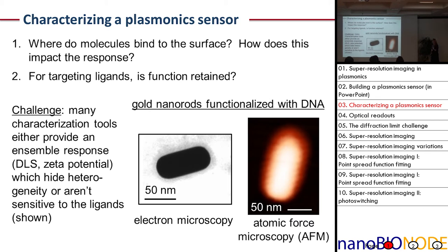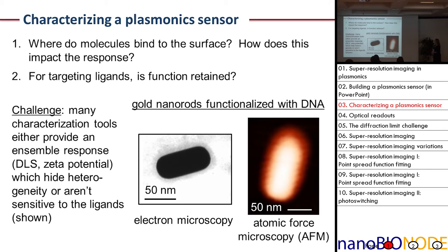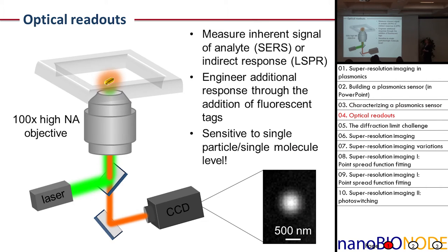All of these issues are really important, and the challenge is that many of our characterization tools are simply ill-equipped to answer these questions. We can do things like dynamic light scattering or measure zeta potentials, which gives us a sense of successful surface functionalization at an ensemble level, but we're not able to see whether all of our sensors are performing optimally. We can turn to single-particle techniques like electron microscopy and atomic force microscopy, but these are often not sensitive to the ligands on the surface since these are typically carbon-based and give poor contrast.